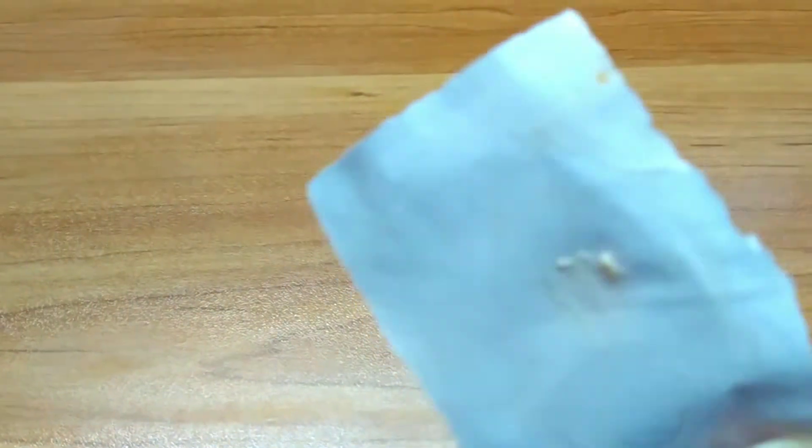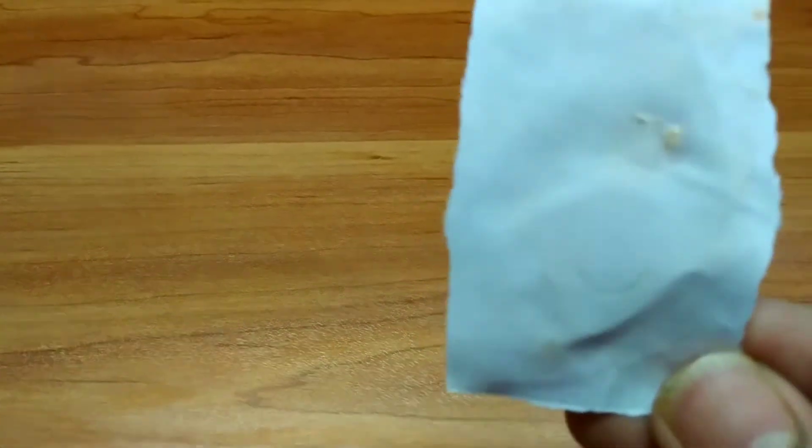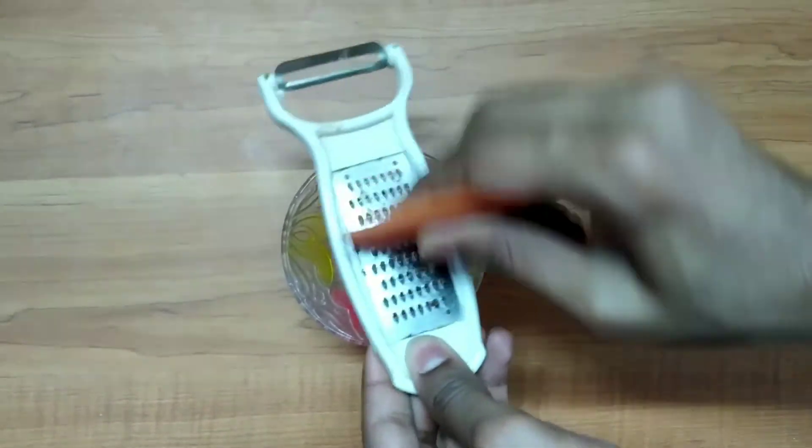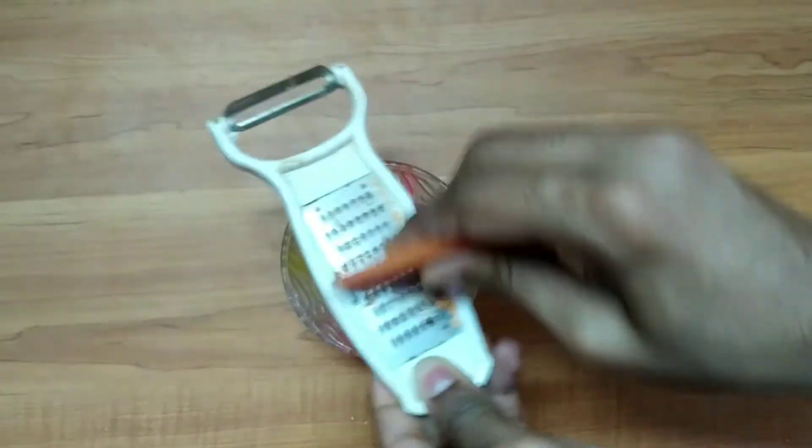The first one is paper soap. During travel or journey, sometimes we cannot go to wash our hands before eating or after toilet. In such cases, these paper soaps are very useful. To make these, first take any old used soap bar and grate it fully. Here, I have used a Dettol soap bar.